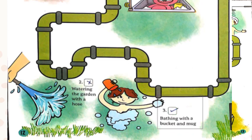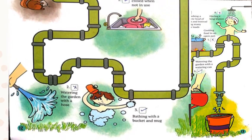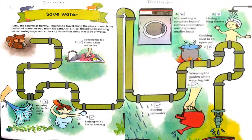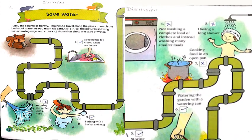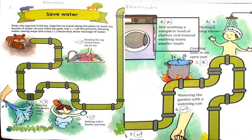Now I am coming to page number 13. The fourth statement is not washing the complete load of clothes and instead washing many smaller loads. In this statement, we are talking about the washing machine, so this statement is a wrong statement.